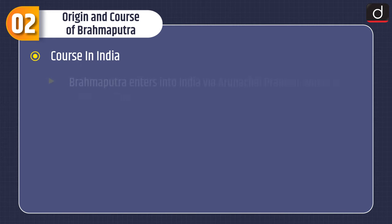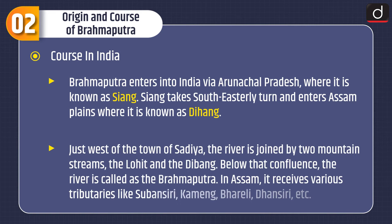Course in India: Brahmaputra enters India via Arunachal Pradesh, where it is known as Siang. Siang takes a south-easterly turn and enters the Assam plains, where it is known as Dihang. Just west of the town of Sadia, the river is joined by two mountain streams — the Lohit and the Dibang — and below that confluence, the river is called Brahmaputra. In Assam, it receives various tributaries like Subansiri, Kameng, Bhareli, Dhansiri, etc.